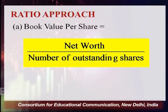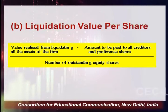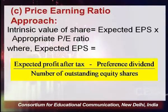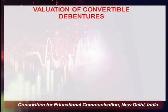Under the ratio approach: book value per share = net worth (share capital + reserves and surplus) ÷ number of outstanding shares. Liquidation value per share = (value realized from all assets − amount paid to creditors and preference shareholders) ÷ number of outstanding equity shares. Under the price-earning approach: value = (expected profit after tax − preference dividend) ÷ number of equity shares × P/E ratio. This concludes our discussion on valuation of equity shares under both the dividend capitalization and ratio approaches.